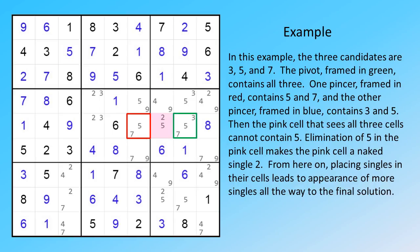Then the pink cell that sees all three cells cannot contain 5. Elimination of 5 in the pink cell makes the pink cell a naked single too.